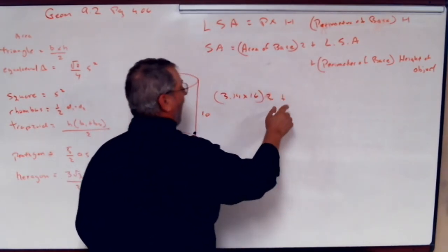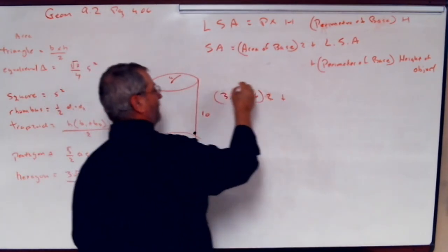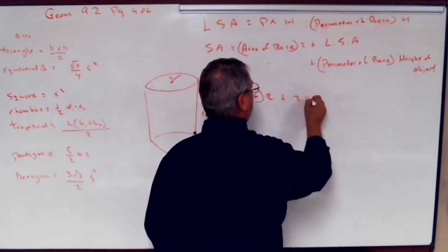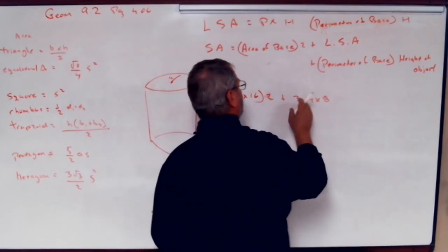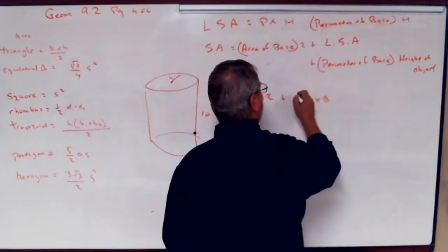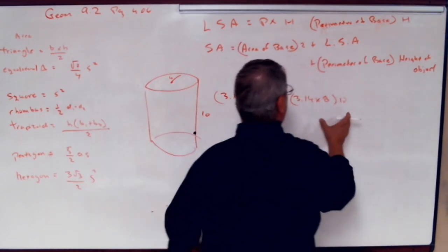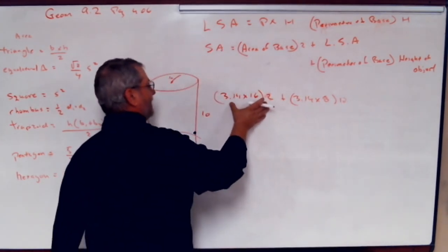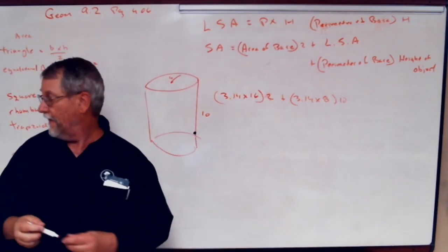Plus, I want the perimeter of the base. That's called the circumference of the circle, right? 3.14 times eight. Circumference, that's perimeter of the base times the height of the object, ten. Get this number, get this number, add them together. That's the surface area.